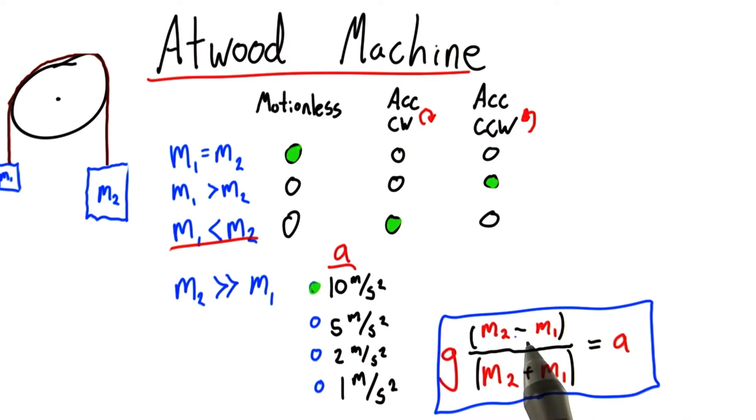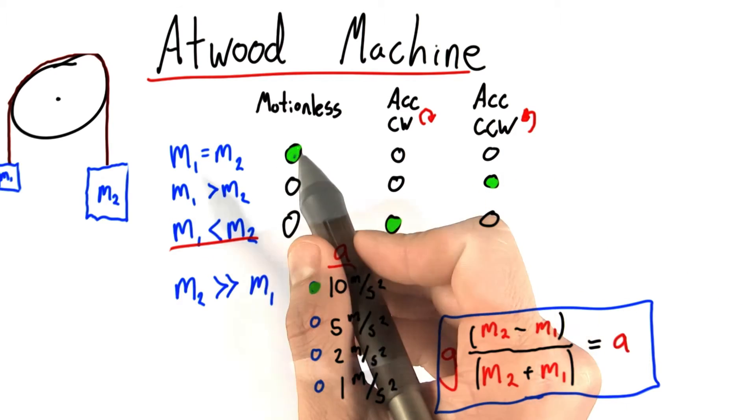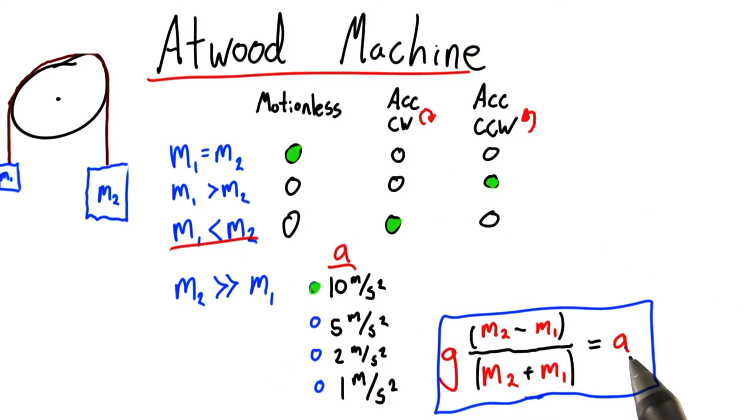Well, this multiplier depends on the difference of the two masses. If these masses are identical, well, subtracting them will give you 0. And you'll have no motion. Acceleration will be 0.